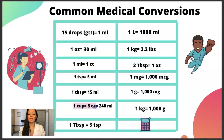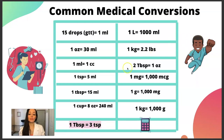One cup is equal to eight ounces, and eight ounces is equal to 240 milliliters — when you multiply 30 by eight, eight times three is 24, add the zero, you get 240 milliliters. And as mentioned, one tablespoon is equal to three teaspoons, so one big spoon equals three little spoons.